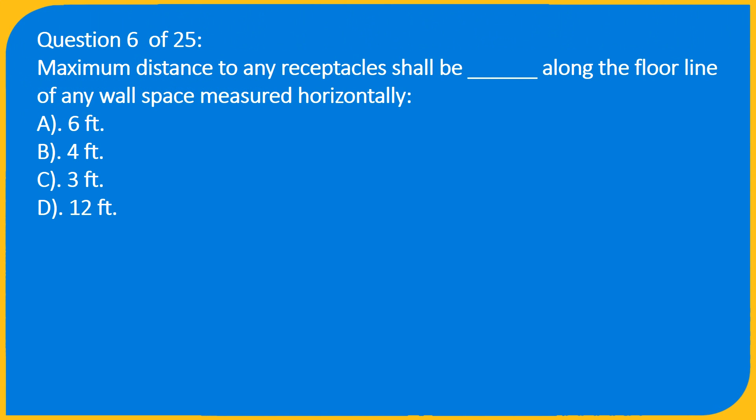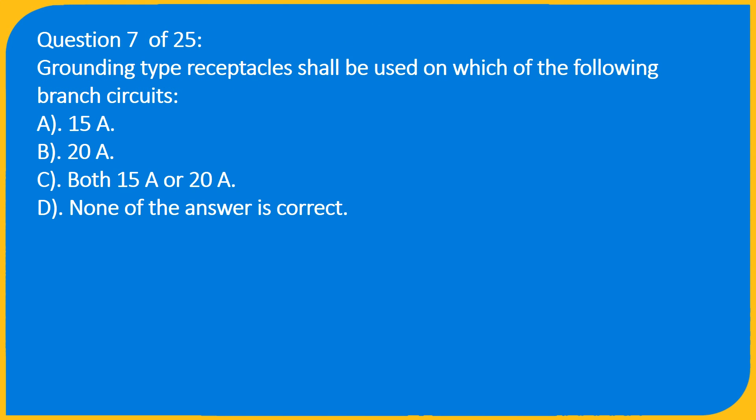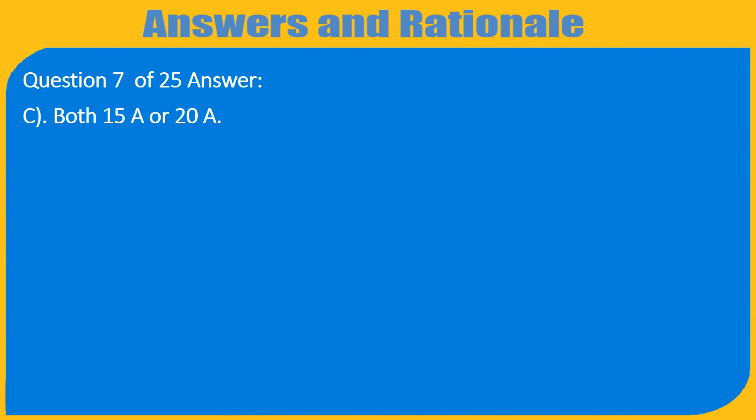Question 6 of 25 Answer: A. 6 feet. Question 7 of 25: Grounding type receptacles shall be used on which of the following branch circuits? A. 15A, B. 20A, C. Both 15A or 20A, D. None of the answers is correct. Answer: C. Both 15A or 20A.